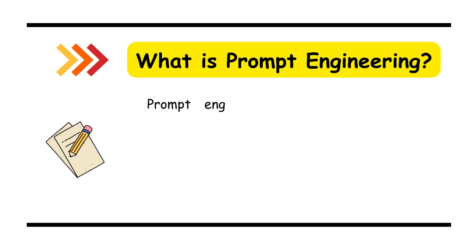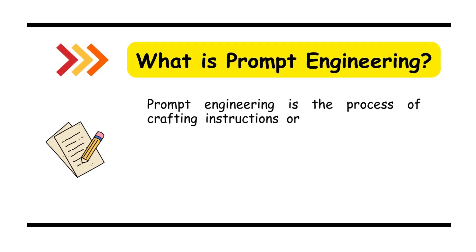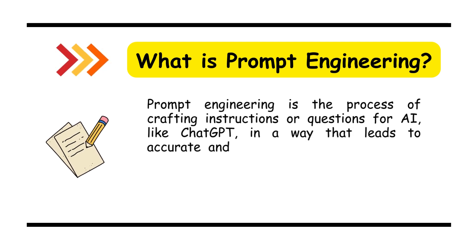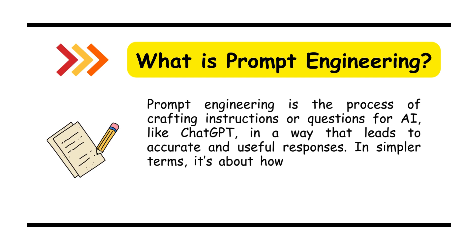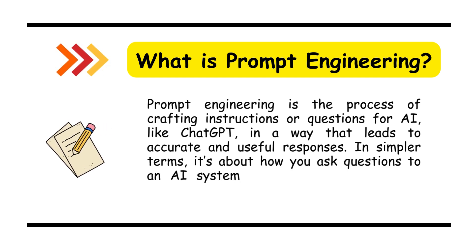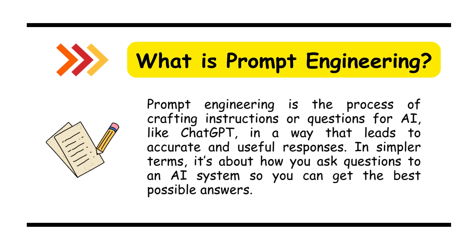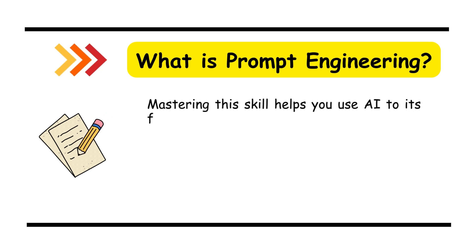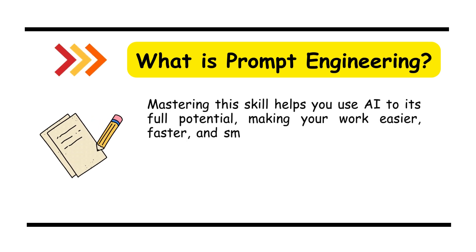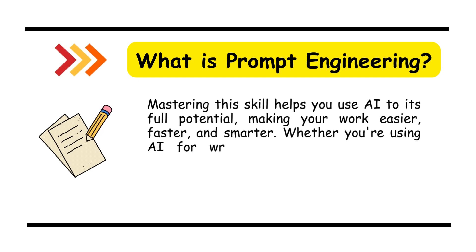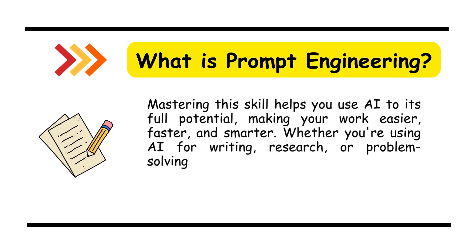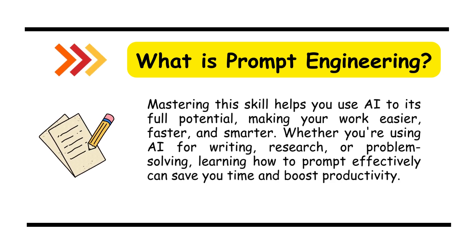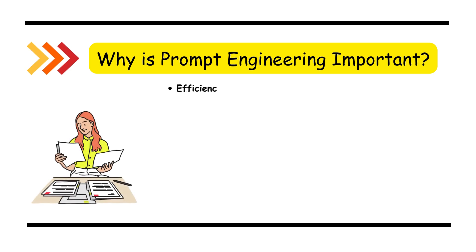What is prompt engineering? Prompt engineering is the process of crafting instructions or questions for AI, like ChatGPT, in a way that leads to accurate and useful responses. In simpler terms, it's about how you ask questions to an AI system so you can get the best possible answers. Mastering this skill helps you use AI to its full potential, making your work easier, faster, and smarter. Whether you're using AI for writing, research, or problem-solving, learning how to prompt effectively can save you time and boost productivity.